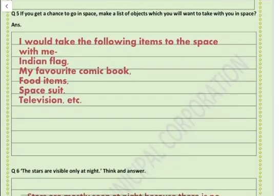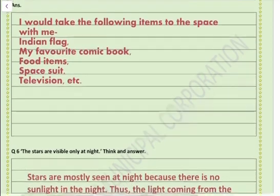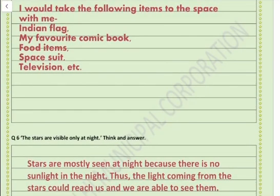Question number 5: If you get a chance to go in space, make a list of objects which you would want to take with you. We can write: I would take the following items into space with me — Indian flag, my favorite comic book, food items, space suit, television, etc. You can also add any other items you would like to take to space.